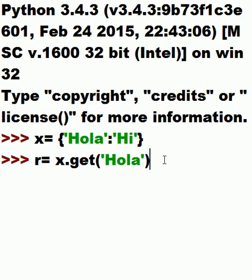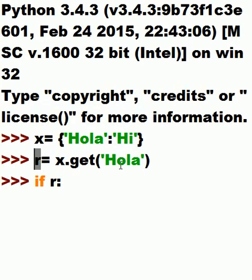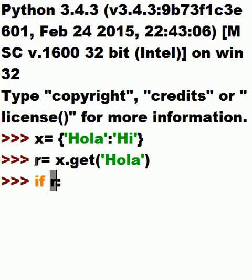Watch what happens when I hit enter - I get a prompt and my cursor goes right back to the beginning. Now, if r - what does that mean? If there's anything in r, the system went and did x.get('hola'), did it find it? If it did, it grabs the value and puts it in r. If it didn't find it, r is going to have None - capital N-O-N-E - which evaluates in an if condition to false. So if there's something in r, this becomes true.